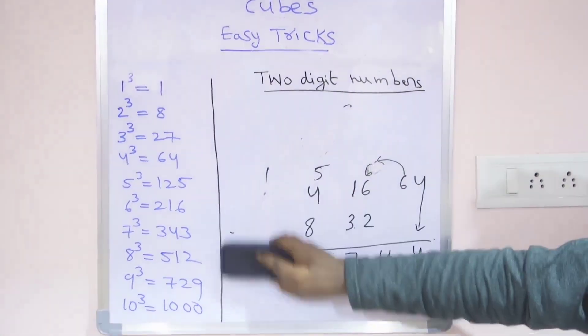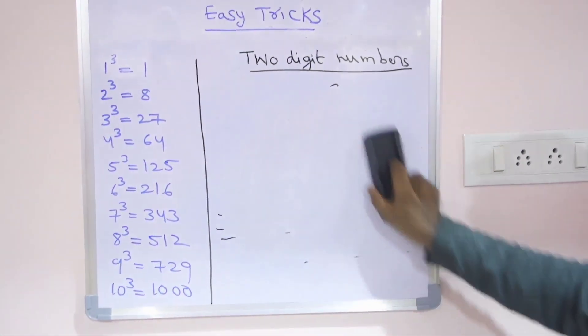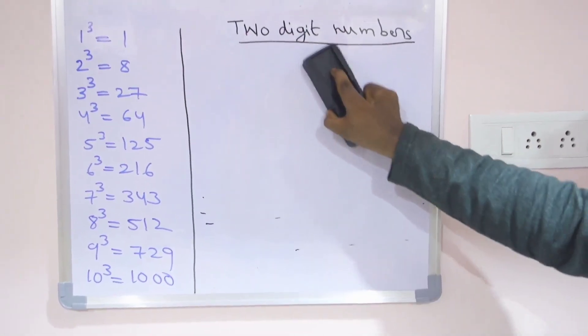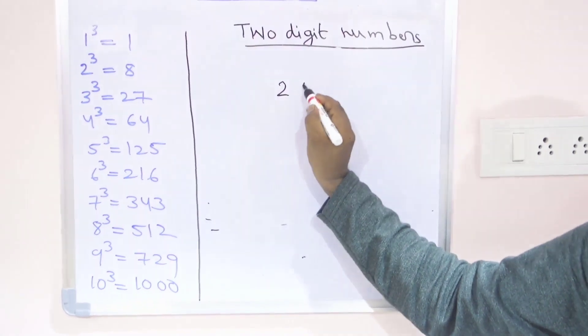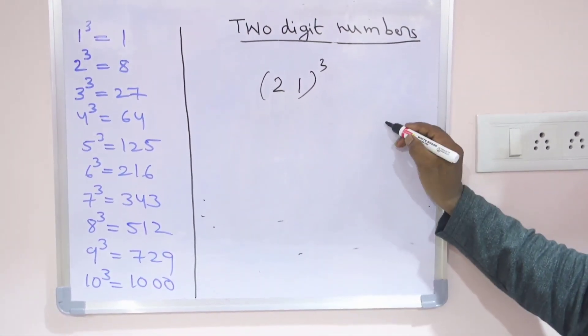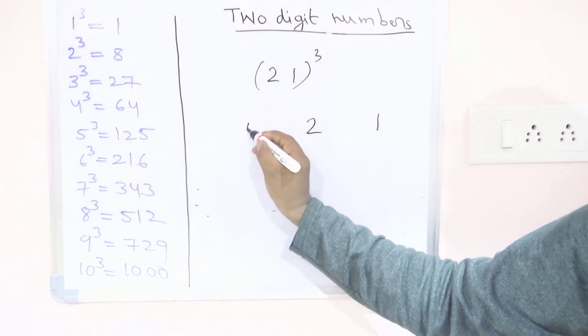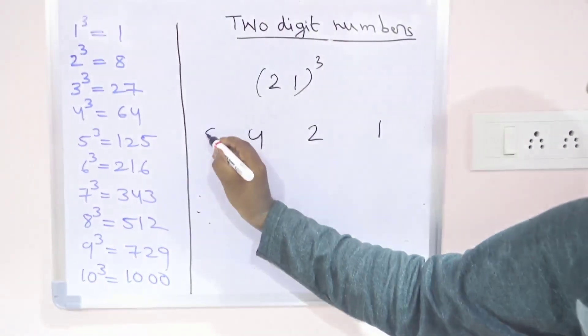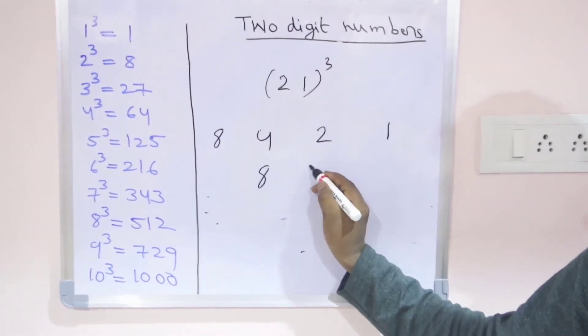We will see another method, ending with 1 now. We were seeing starting with 1, now we go for ending with 1. 21 whole cube. Ending with 1 means first write 1 here. Next, 2 times 1 is 2, 2 times 2 is 4, 2 times 4 is 8. Next, same method: double these numbers.